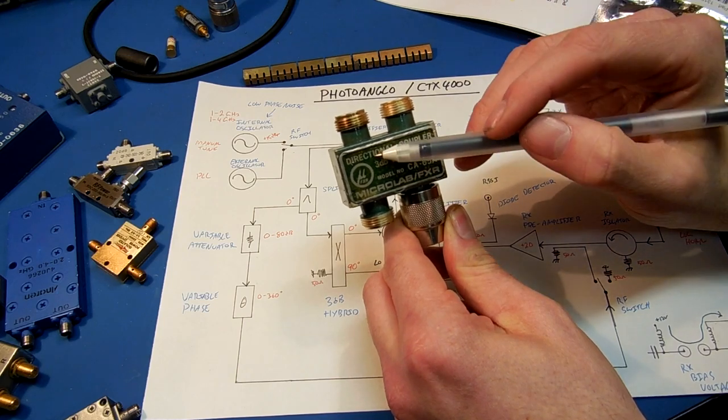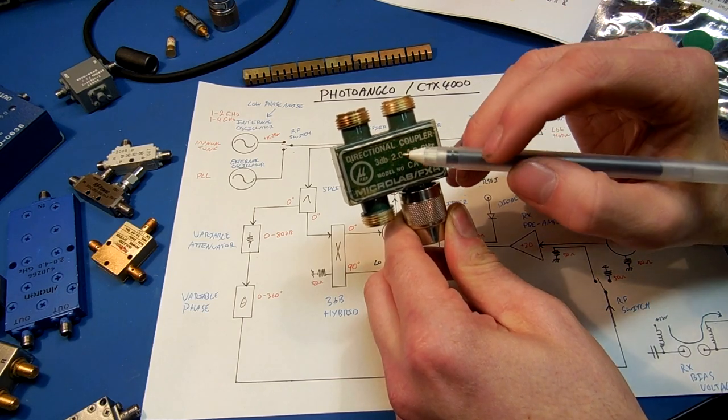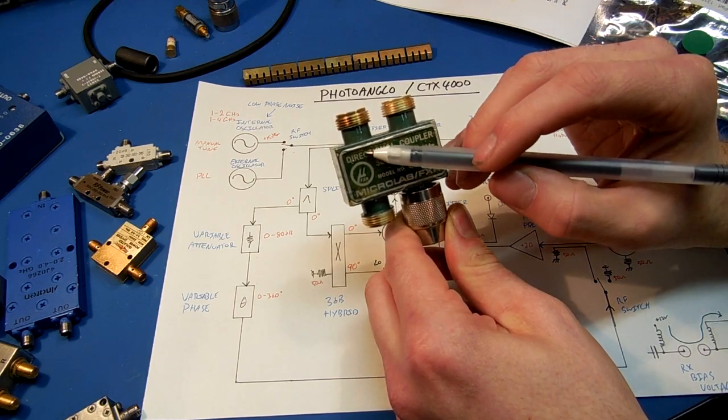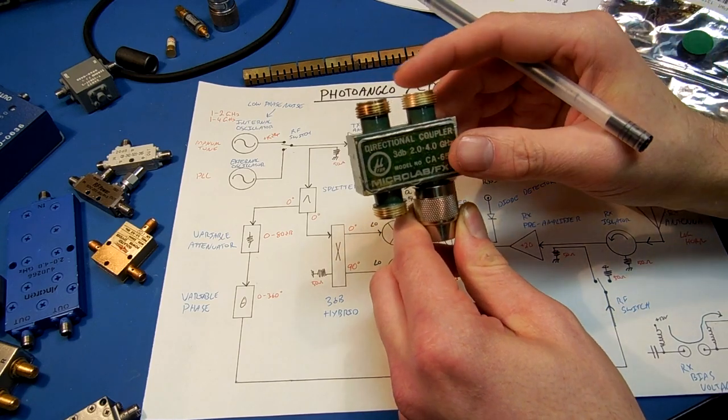It gets split into two again. 3 dB. But this time we have a phase shift. There's a zero degrees output, and a 90 degrees output phase shift.